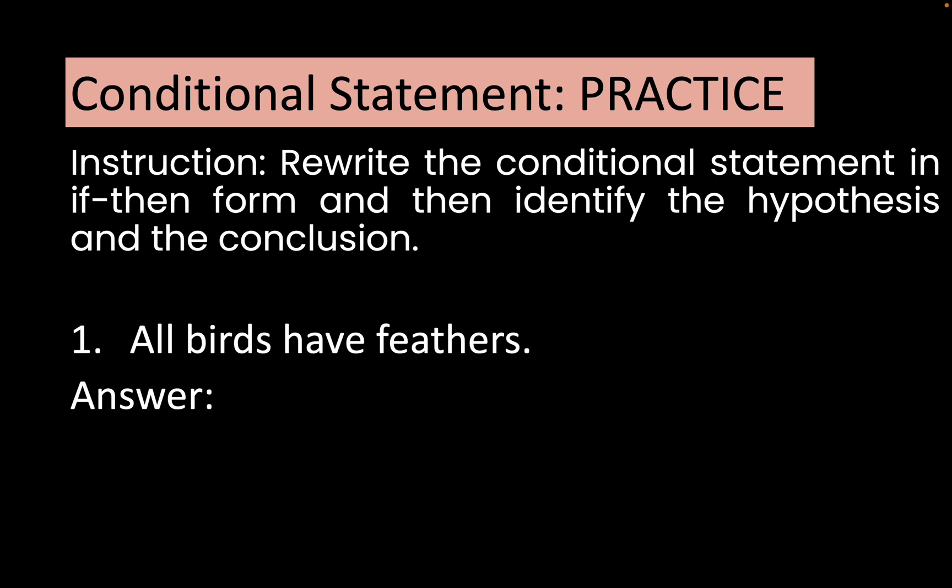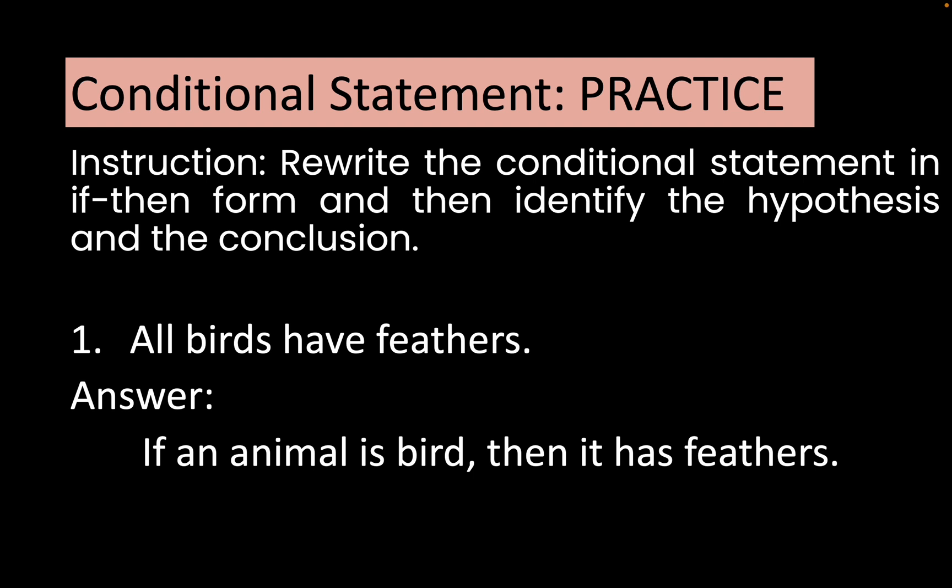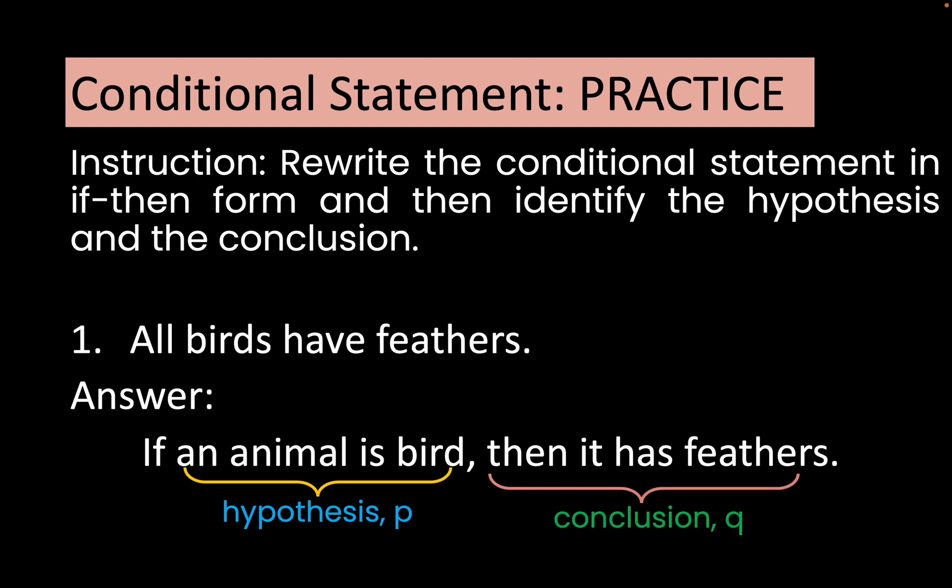Another example: rewrite the conditional statement in if-then form and identify the hypothesis and conclusion. Number one: 'All birds have feathers.' We rewrite this as: if an animal is a bird, then it has feathers. The hypothesis is 'an animal is a bird' — that is your p-statement — and your conclusion is 'it has feathers' — that is your q-statement.